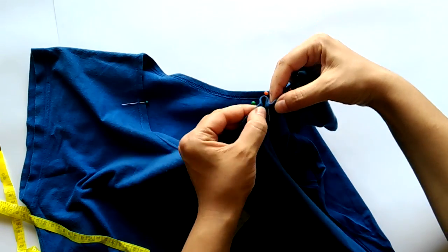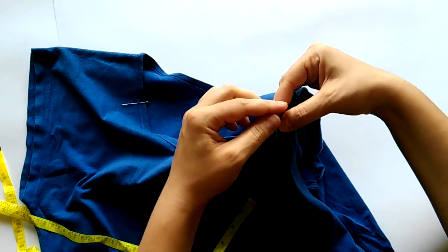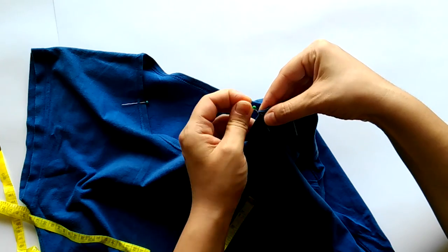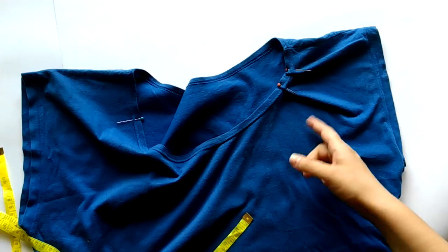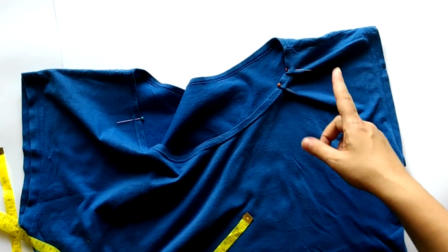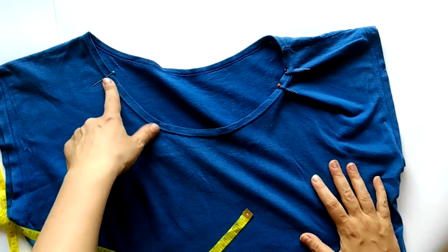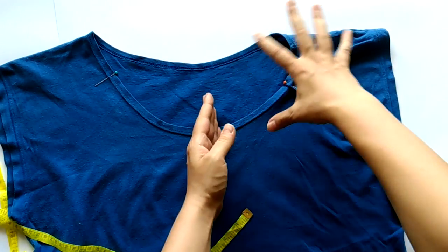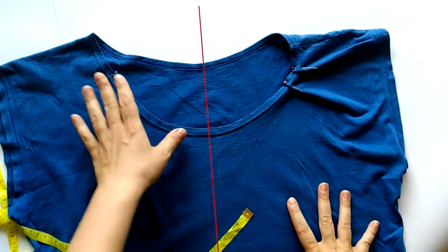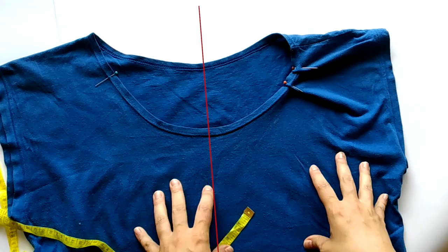I do that for both pleats. Be careful to fold the fabric in the same direction so you'll end up with even and matching pleats. You can see how much we have reduced the neckline on one side already. I would suggest you try the t-shirt on before you sew and adjust if you need to. I'm going to do the same on the other side.